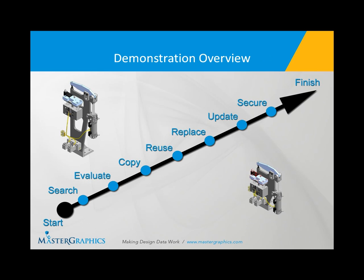Next we're going to provide a demonstration. The first thing we're going to do is search for information. Vault is very powerful in that scenario — we're using an SQL database to search information. Vault can search a million records in seconds, whereas Windows Explorer doesn't have the capability to really look into your data. I'll talk about that a little bit further in a minute.